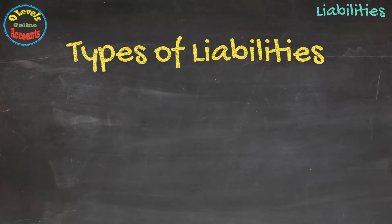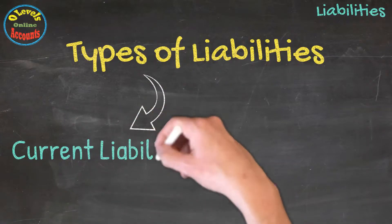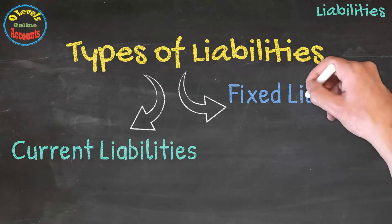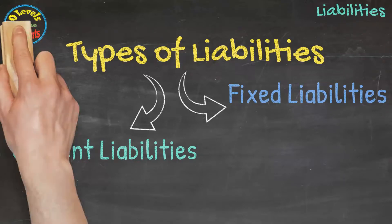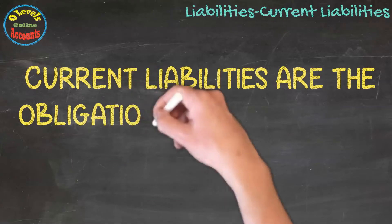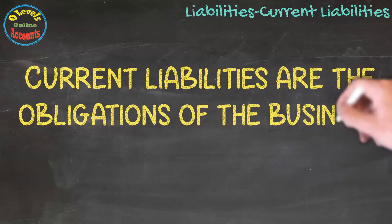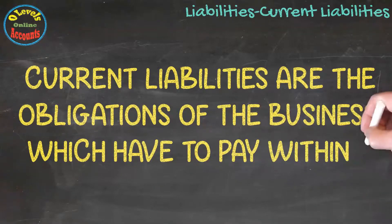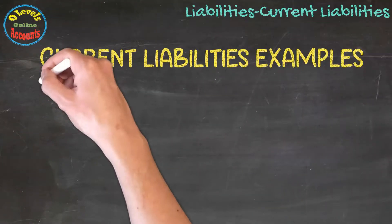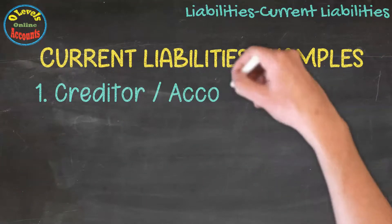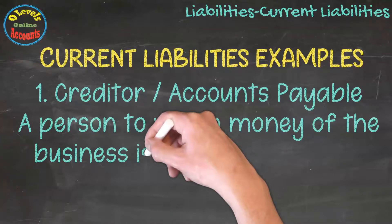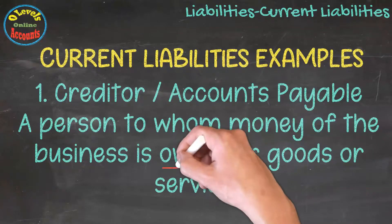There are two types of liabilities: current liabilities and fixed liabilities. Let's discuss them one by one. Current liabilities are the obligations of the business which have to be paid within a year. The first example of current liabilities is creditor, or accounts payable. A creditor is a person to whom money of the business is owed for goods or services.